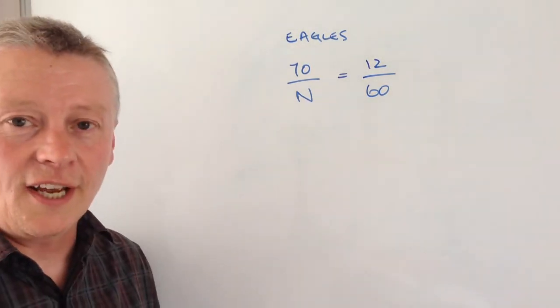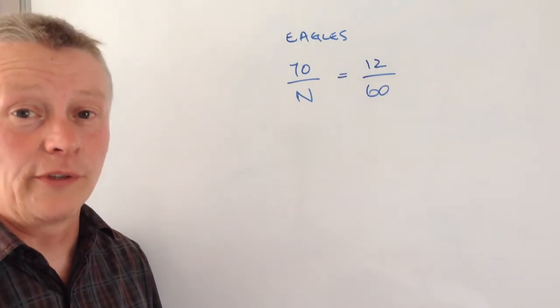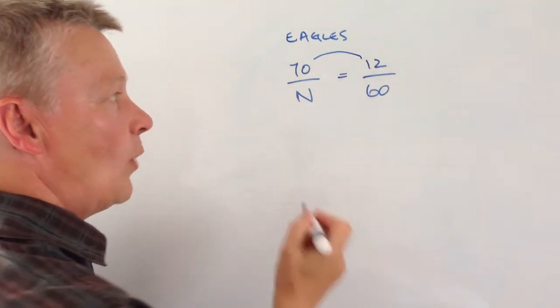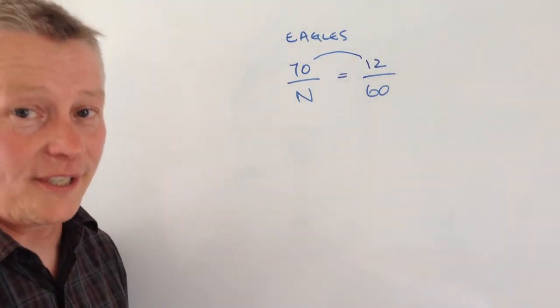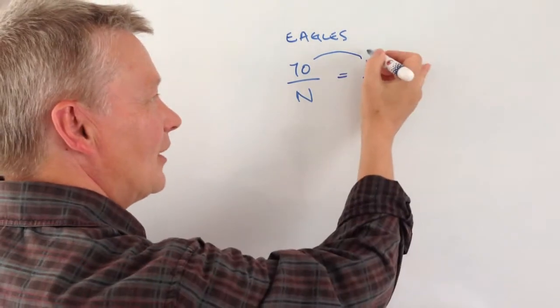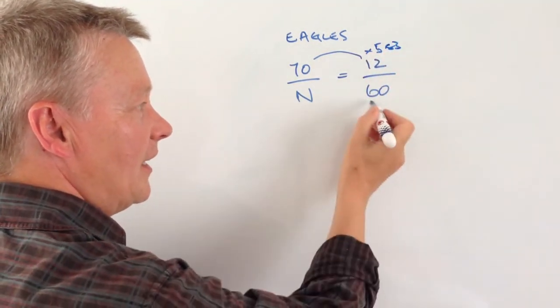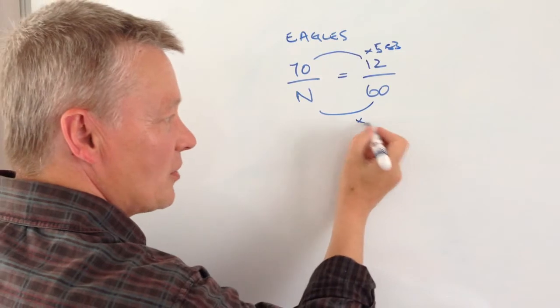5.83—you will need a calculator for these sometimes—I need to multiply this 60 also by 5.83. Now it seems a little bit counterintuitive, but what you'll actually find is